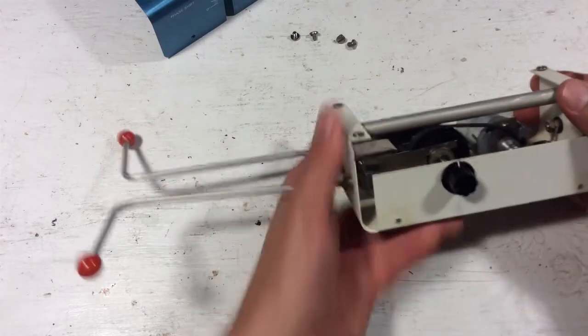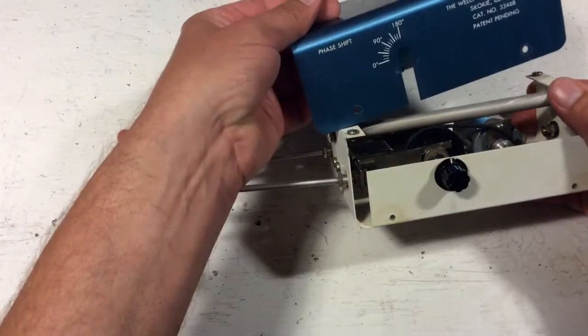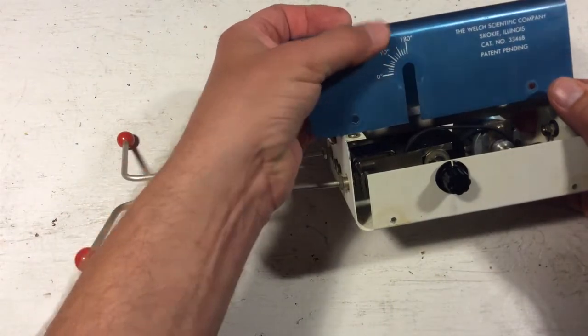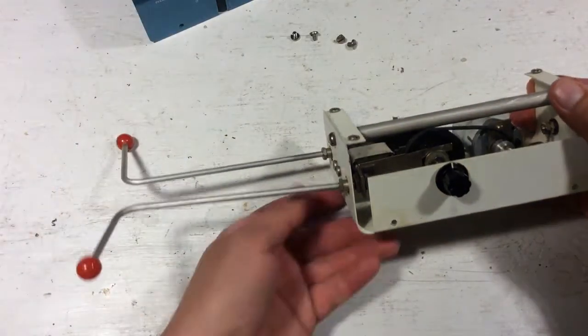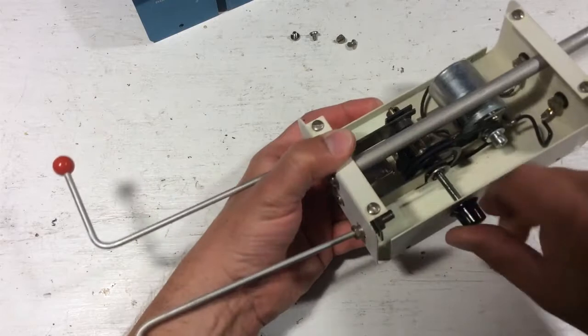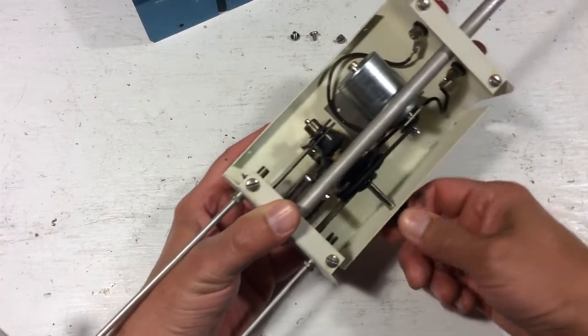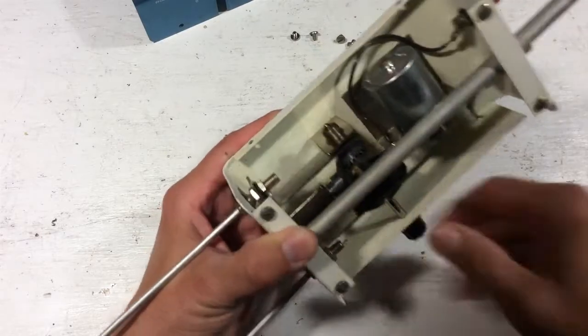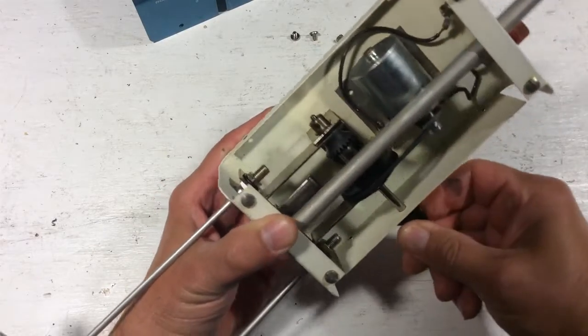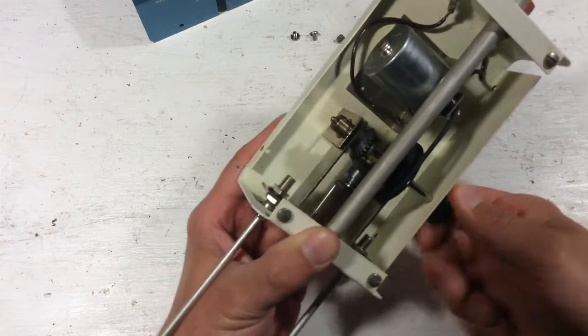Then this phase shift button, like you saw here, it's phase shift from 0 to 180 degrees. You turn that, and if you look inside here, there's a few gears here and it just changes that. You can see what's going on there.